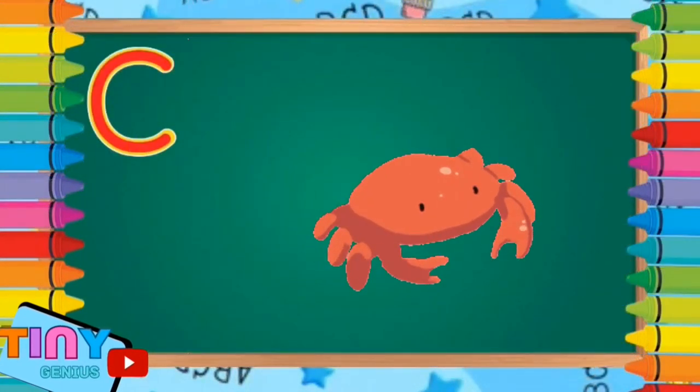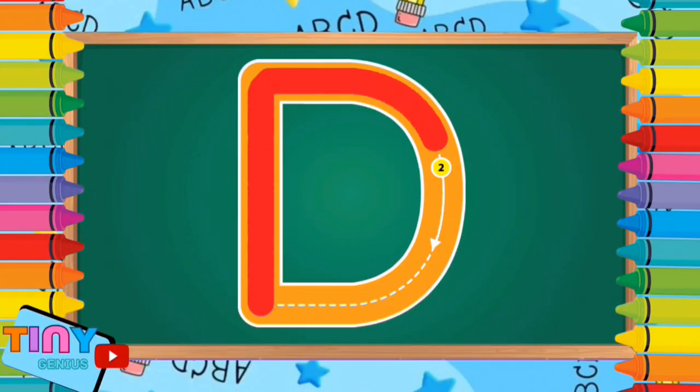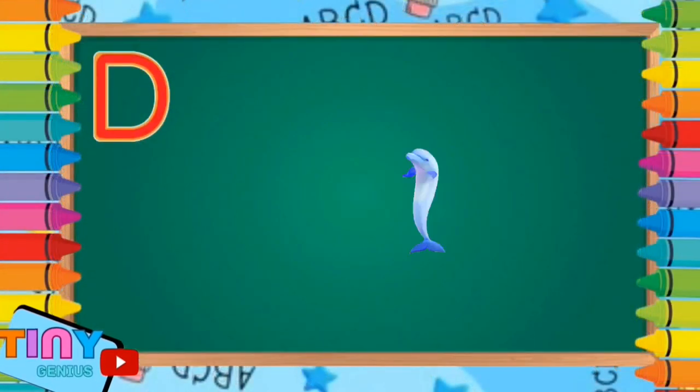Let's write the next letter D. Pull down. Go back to the top and around. D is for dolphin.